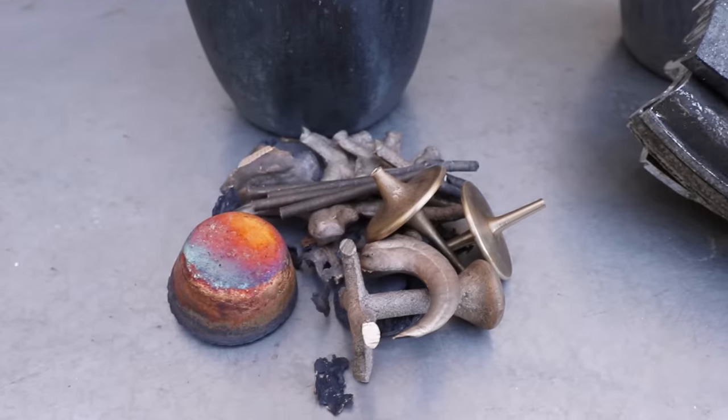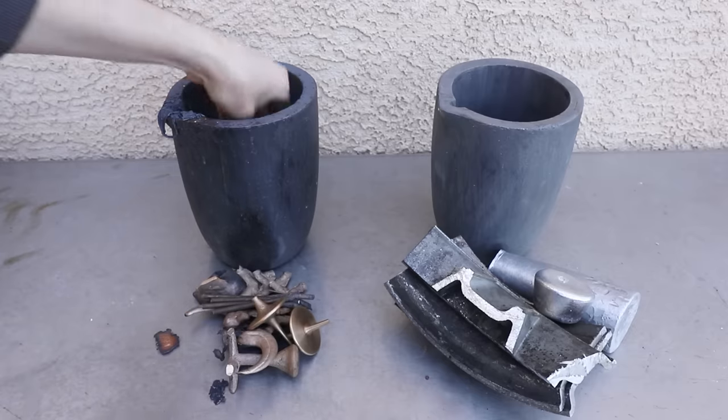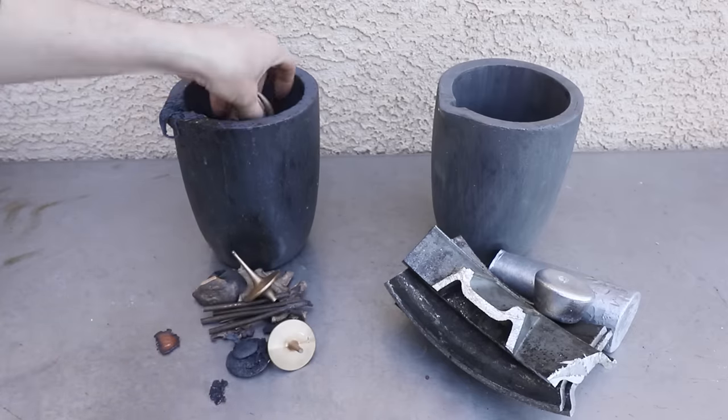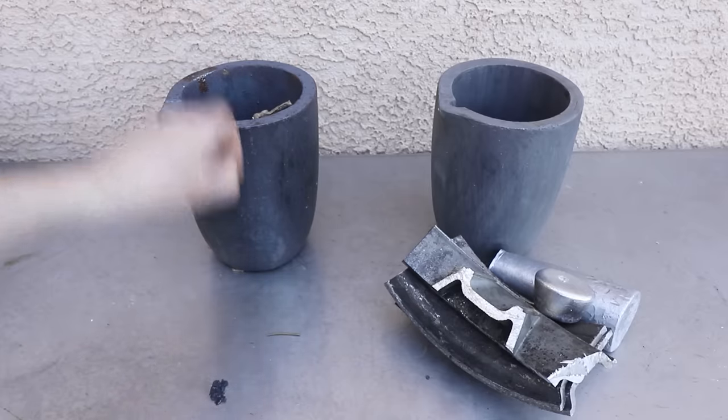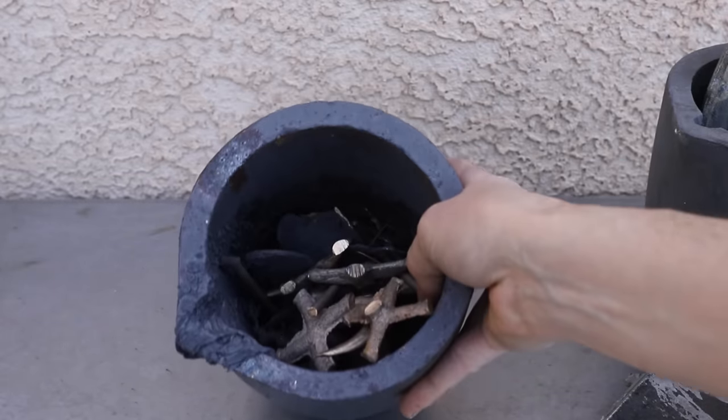While the shells were heating up, I loaded some crucibles with some scrap bronze and aluminum and then fired up my homemade furnace. I melted the bronze first. Bronze has a melting point of about 1700 degrees Fahrenheit. This amount took about 30 minutes to melt.